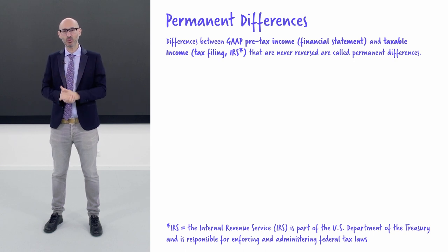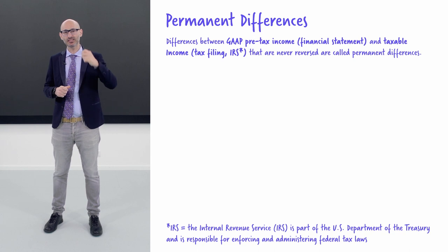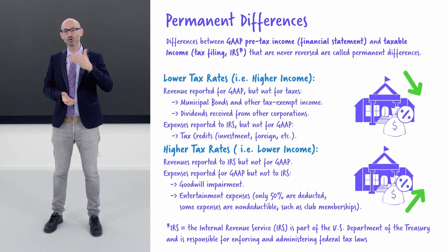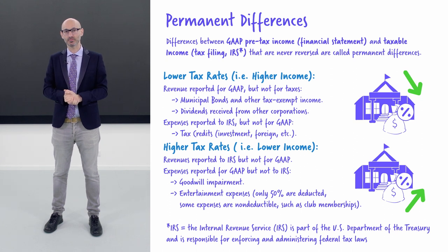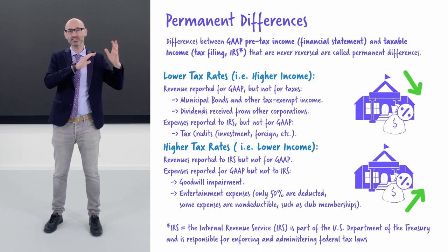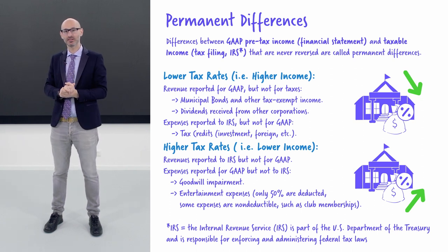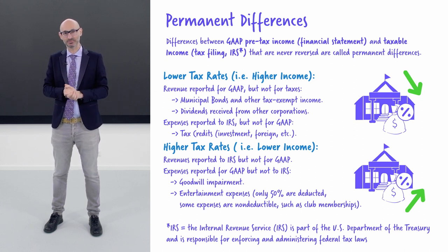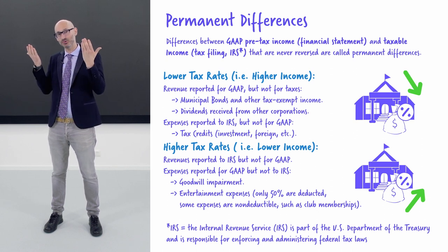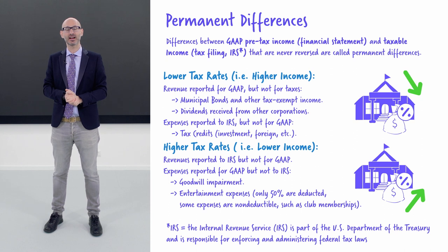In a tax system at 20%, each dollar of revenue leads to taxes paid of 20 cents, and each dollar of expenses leads to a deduction of 20 cents. So more revenues means more taxes, and more expenses means less taxes. Governments have many tricks to push us into doing good stuff, including lower taxes on revenues or higher deductions on expenses, and also tricks to take us away from bad stuff, like higher taxes on revenues and lower tax deductions on expenses.